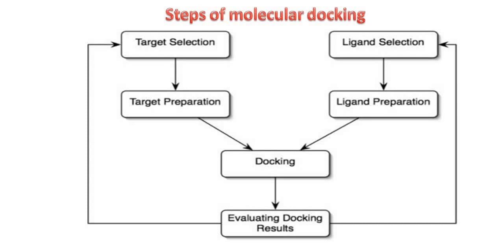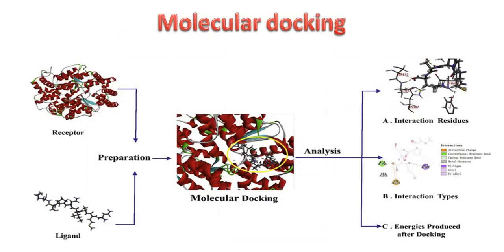Then you have to prepare the target and the ligand. So the next step is target preparation and ligand preparation. Once the target and the ligand are prepared, these files can undergo docking. After docking, you can evaluate the docking results. You need a receptor which is a protein, and a ligand which can be any molecule. You have to prepare their PDBQT files, and after their PDBQT files are prepared, they will undergo molecular docking using AutoDock Vina. After that, you can analyze various interactions between the amino acid residues and the docked molecule, and you can also look at the energies of the molecules.